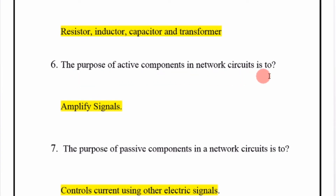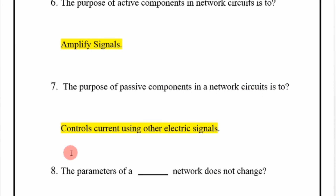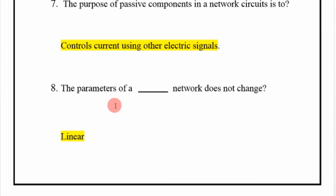The purpose of active components in a network circuit is to amplify signals. The purpose of passive components in a network circuit is to control current using other electric signals.